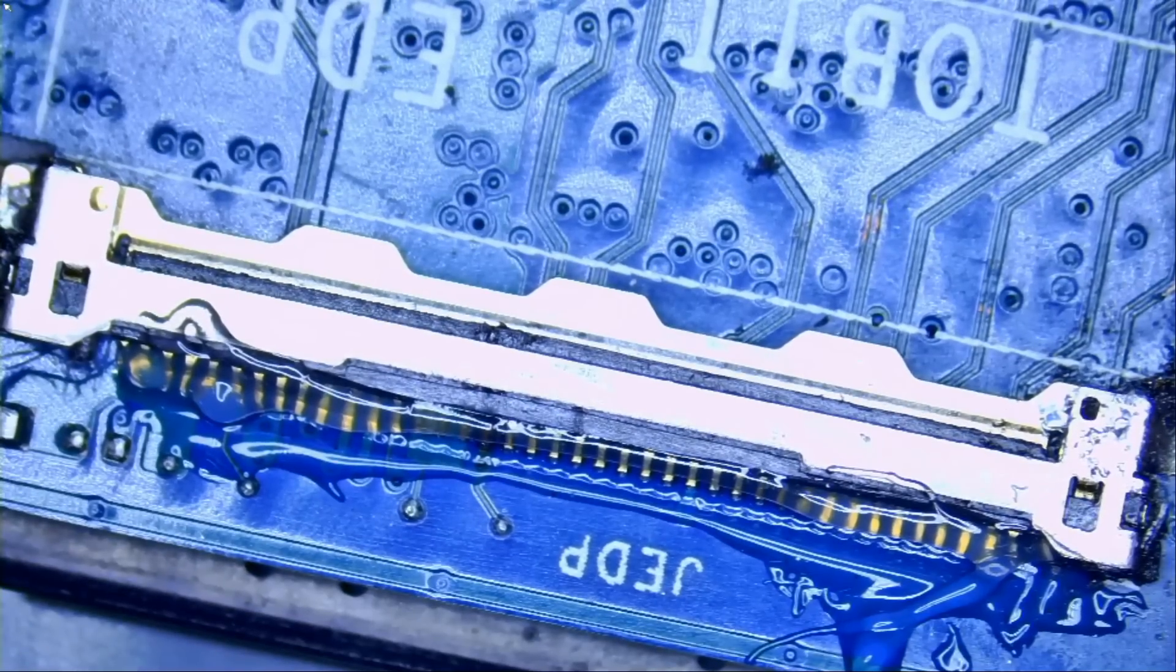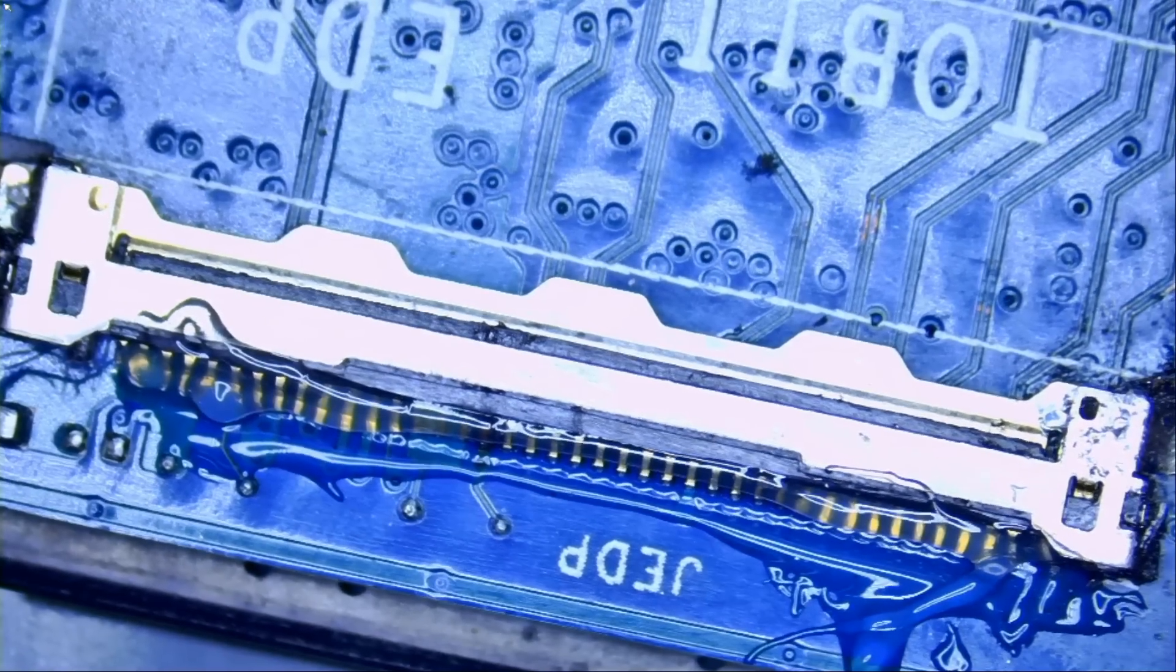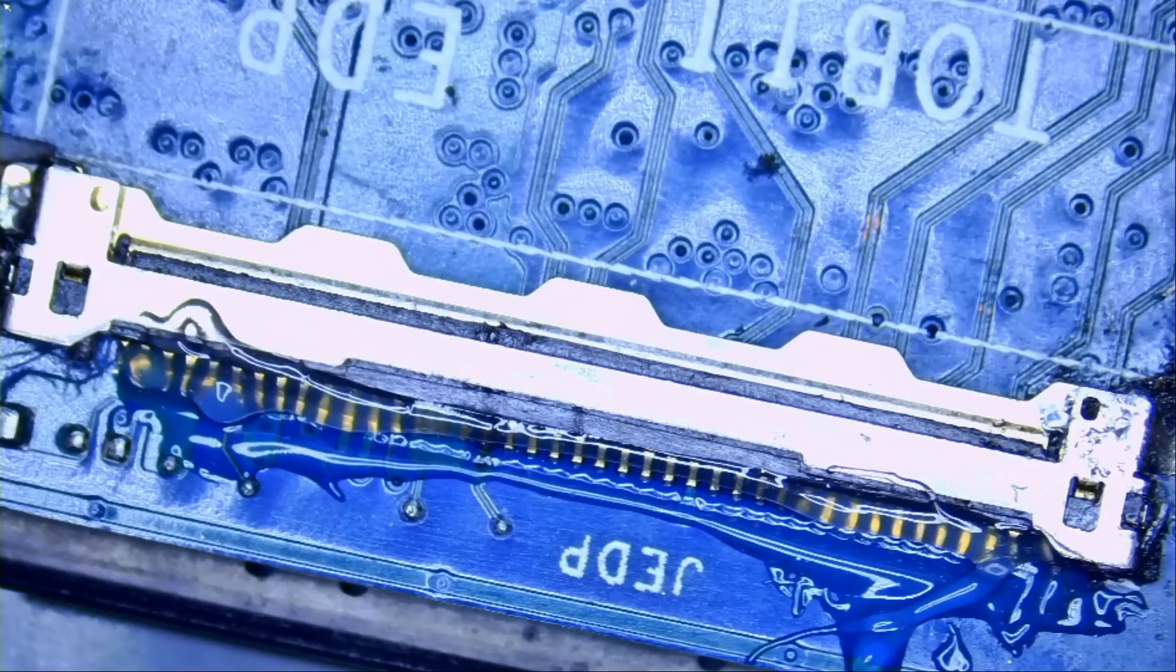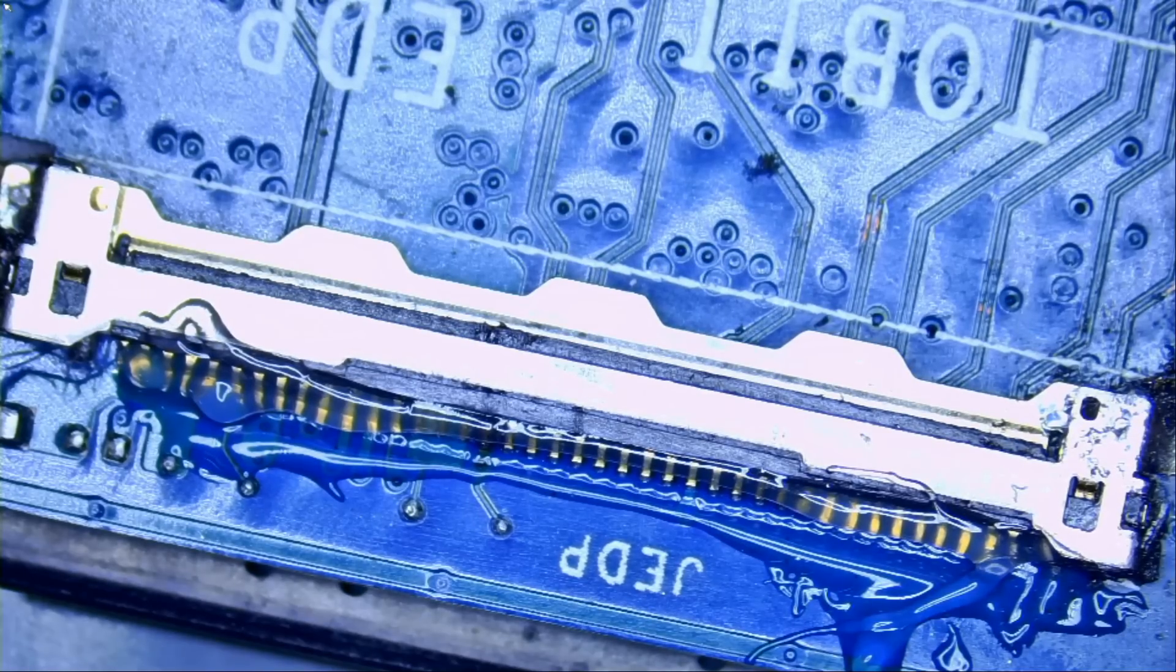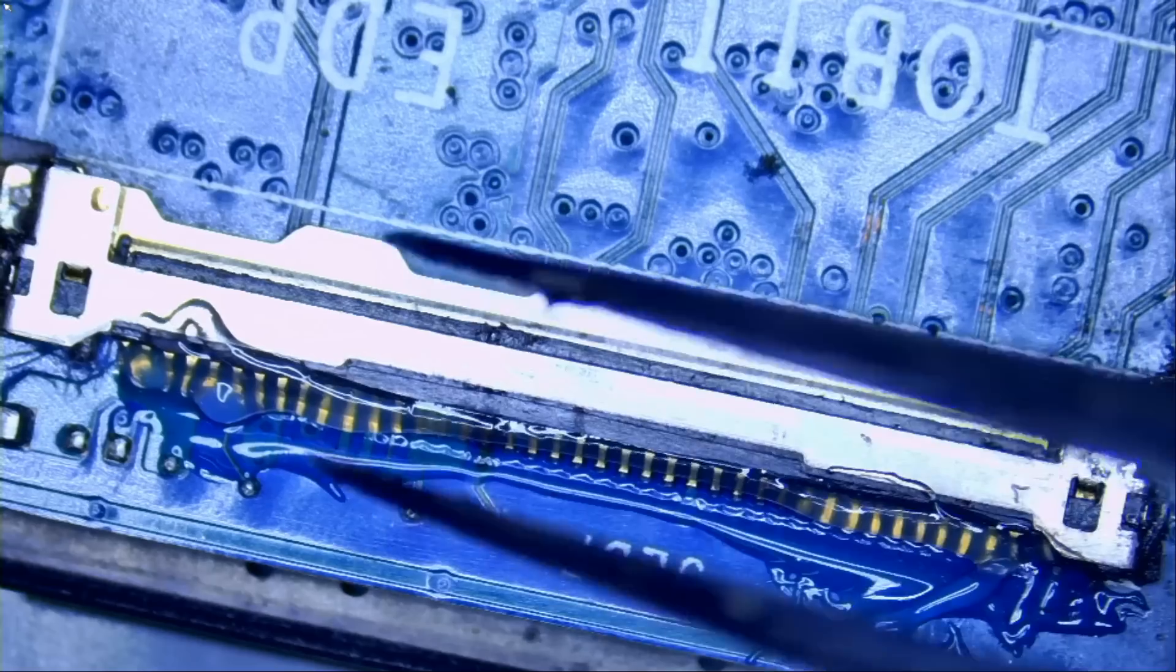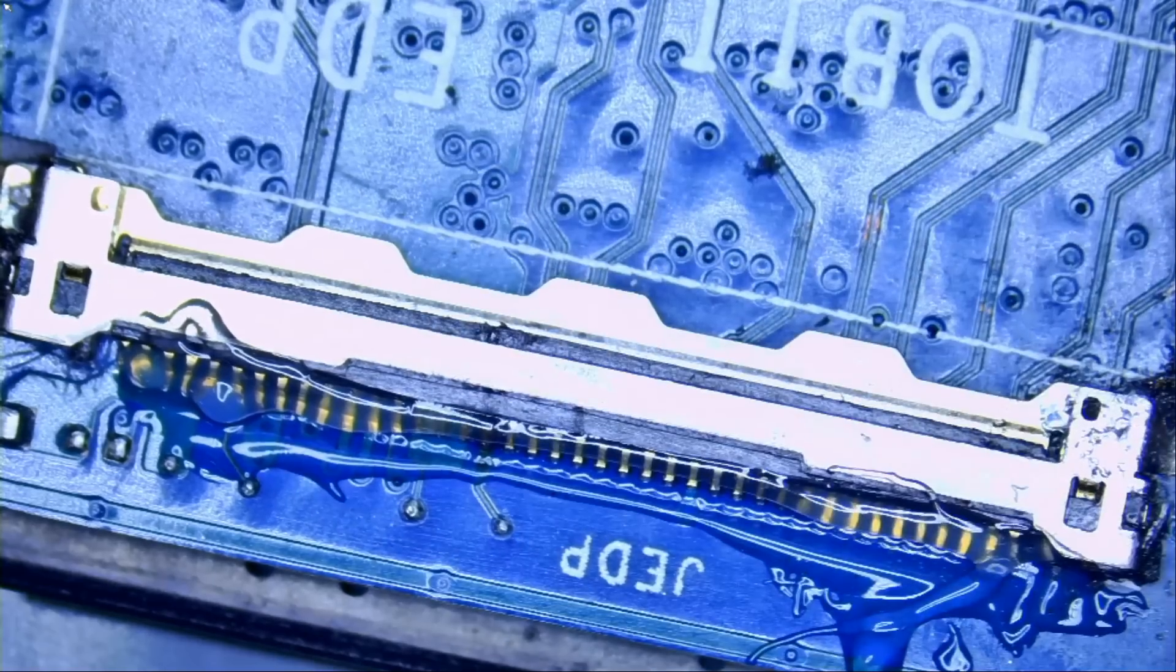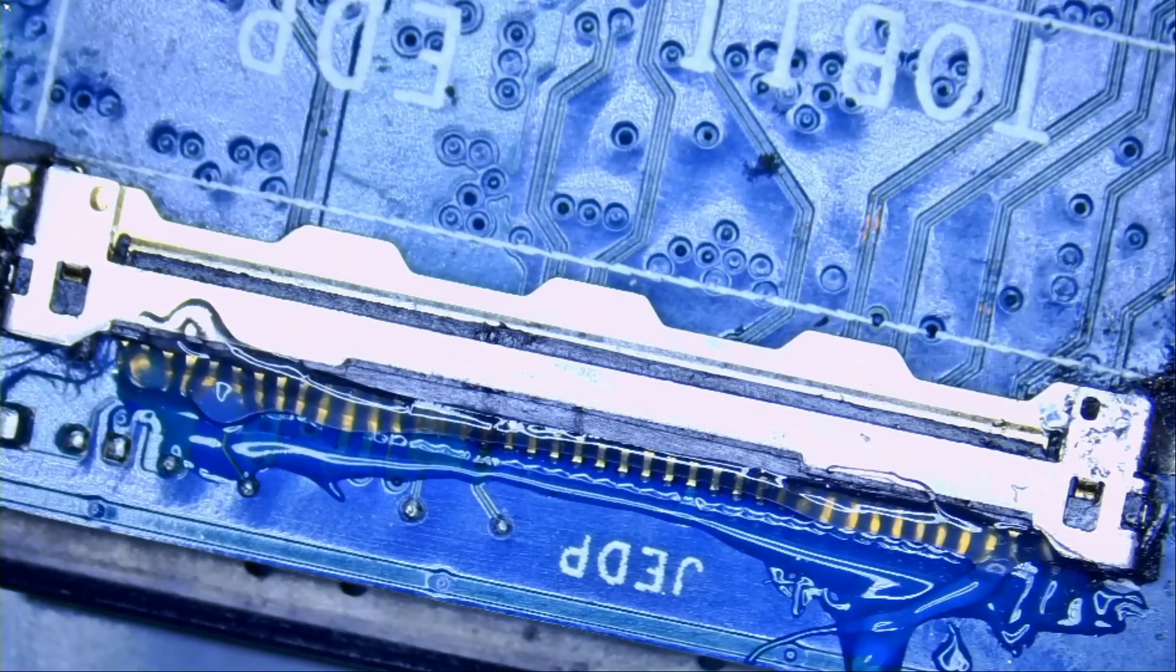So the only way to remove this connector right now is to apply low melt solder. Low melt solder will mix with unleaded solder that's already on the board, and it will lower the melting temperature to a point where we may just be able to remove this connector without any hot air. Let's go ahead and do it.